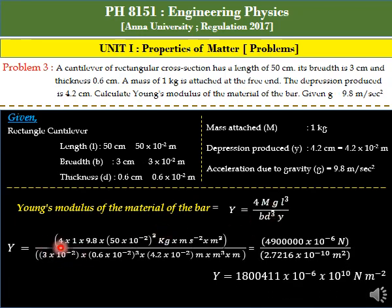Y equals 4 times 1 times 9.8 times (50 times 10 to the power minus 2) whole cube, divided by (3 times 10 to the power minus 2) times (0.6 times 10 to the power minus 2) whole cube times (4.2 times 10 to the power minus 2). The units are kg, m, s to the power minus 2, m cubed, divided by m, m cubed, m.